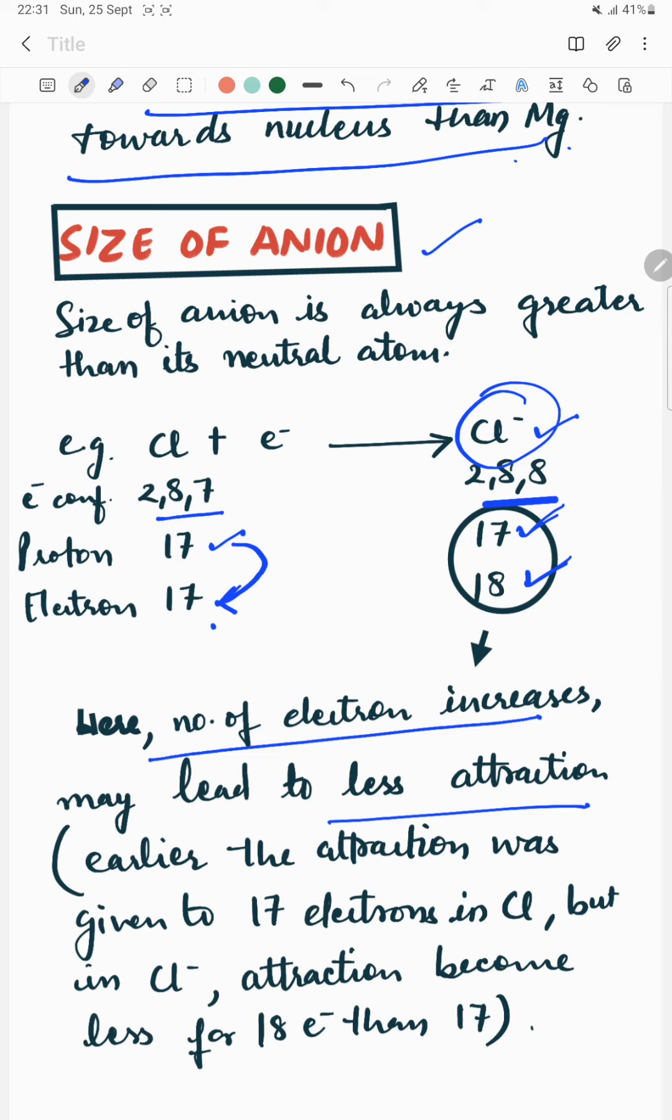Therefore, size of anion is bigger than its atom. Thank you and have a nice day.